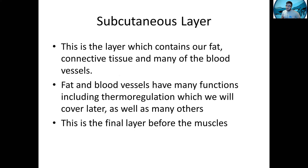Next is the subcutaneous layer, which is the innermost layer of the skin. It's the layer that contains most of our fat, connective tissue, and many of the blood vessels. Fat and blood vessels also have many functions, one of which is thermal regulation, which we'll cover later. A lot of the blood vessel functions we've already covered in the circulatory system lectures. Fat is mainly used for energy storage, which we covered in our glycolysis and ATP synthesis lectures. This is the final layer before the muscles start.